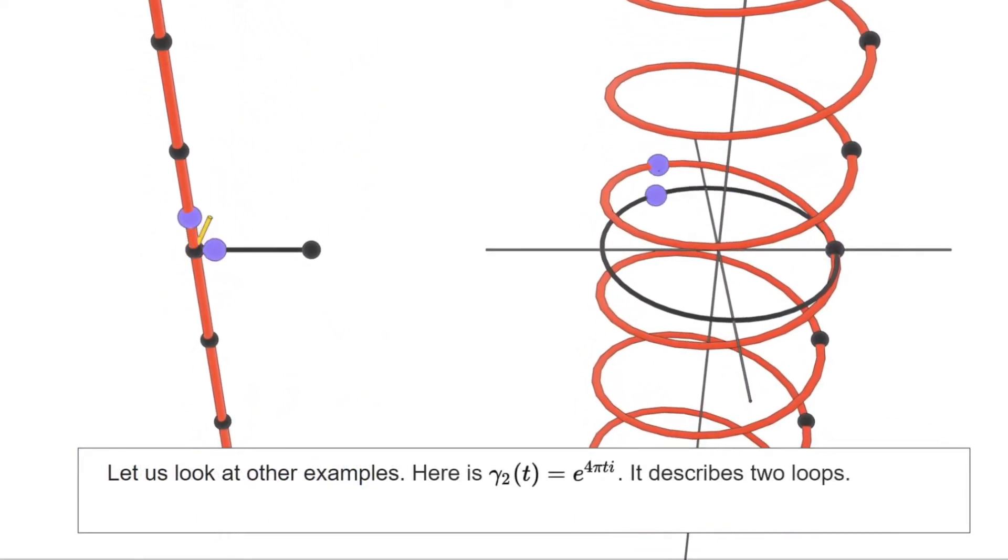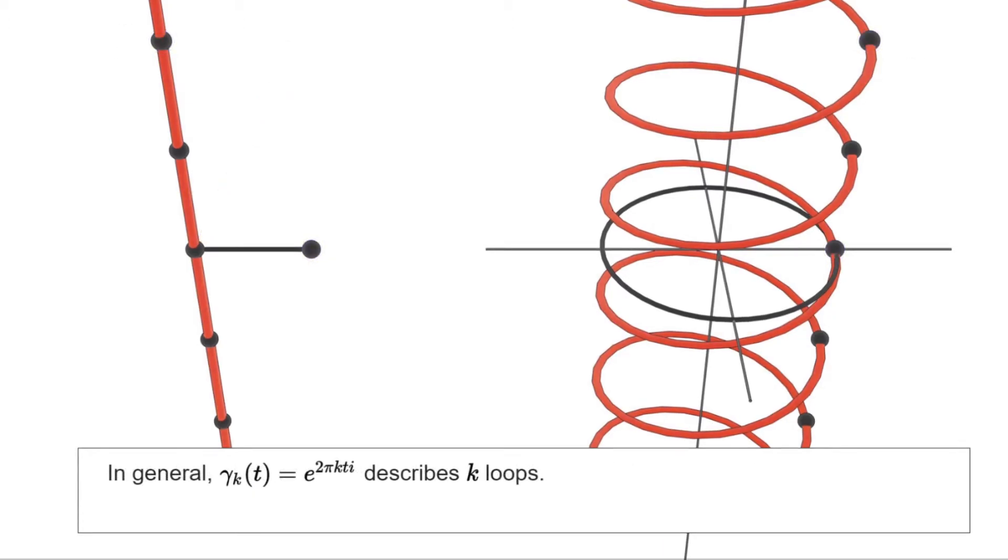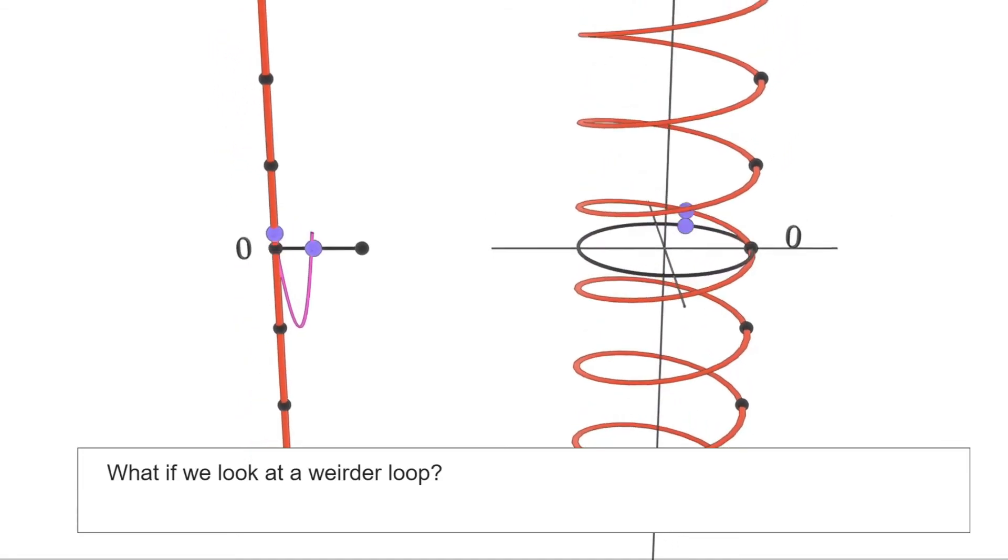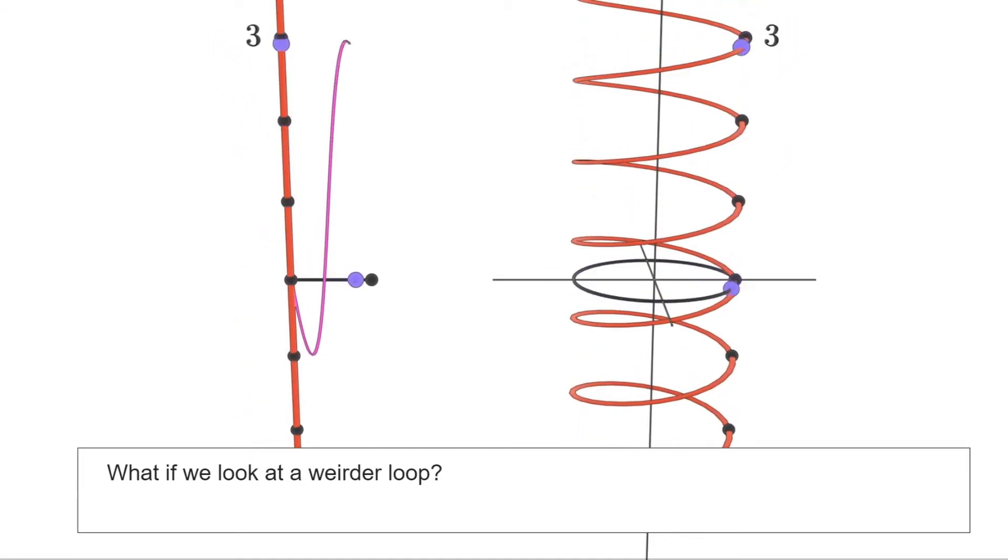The next easiest example is γ₂, the loop that turns twice clockwise around this one. As we see here, the lifts of γ₂ send T to 2T plus some integer. In particular we see that the turning number is 2, as we expected. In general γₖ, the loop that turns k times counterclockwise around this one, will be lifted to the map that sends T to kT plus n where n is some integer. Let us look then at a more interesting example. Here we have a loop ν that turns once clockwise, then four times counterclockwise, and then finishes turning clockwise once more. This means that ν has turned twice counterclockwise in total and we see this on the left. We have a lift ν tilde that starts at zero and finishes at two. This means that the turning number was 2.